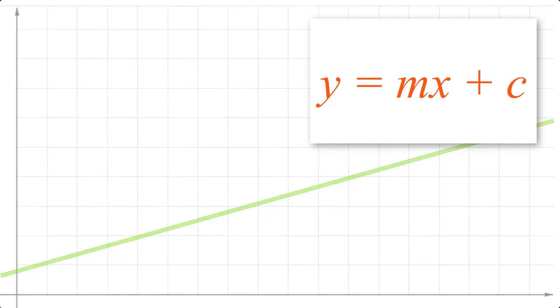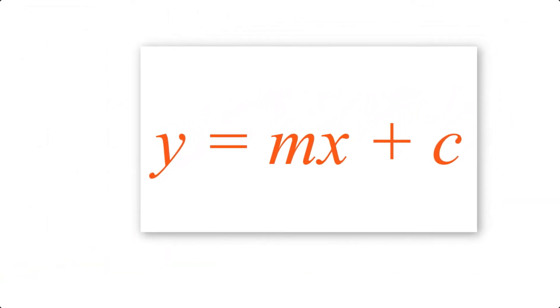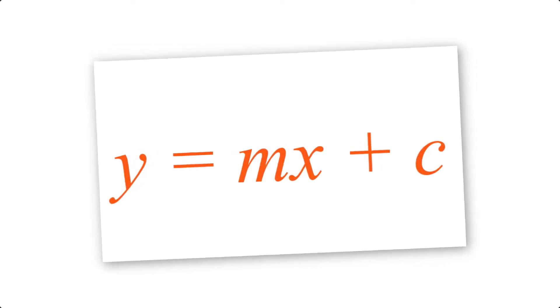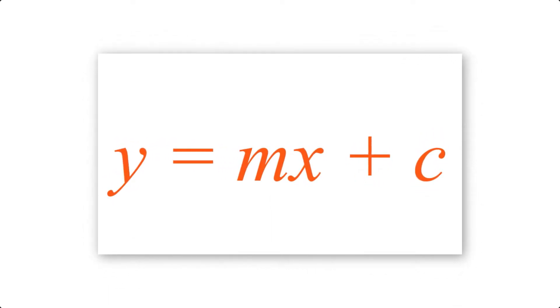But for now, the two main things that you need to remember: m tells us how the line moves, and c tells us where the line cuts.